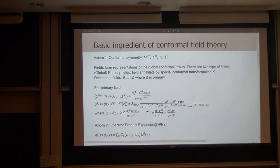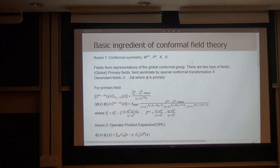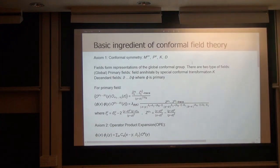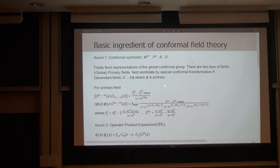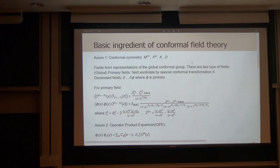Another type of field is the descendant field — you have some derivative operator acting on that field. So once you know the scaling dimension of the primary field, you immediately know the scaling dimension of the descendant field. All the properties of the descendant field are completely determined by the corresponding primary field.